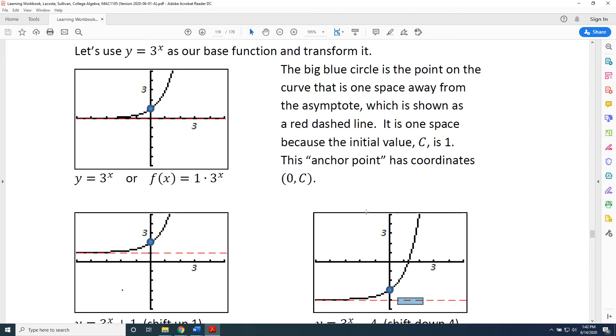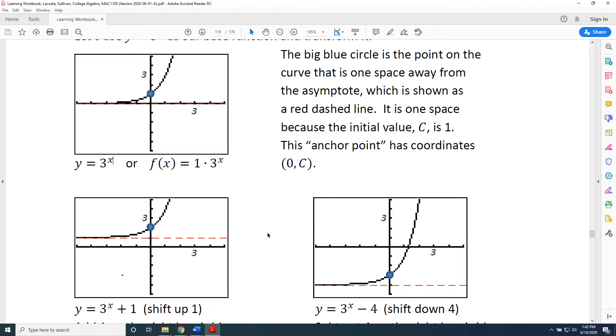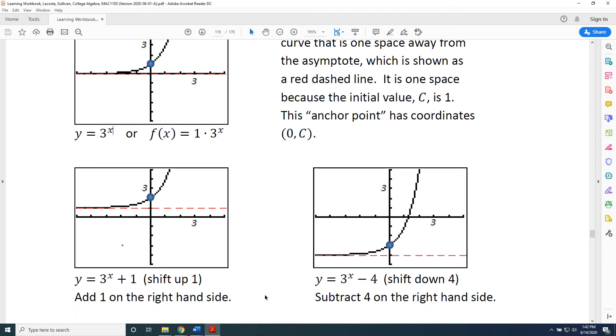So, what is the equation of the graph in the lower right? Well, it's the same as the equation of the graph in the upper left, but vertically shifted down 4 spaces and therefore with a subtract 4 at the end. The equation of the graph in the lower right is y = 3^x - 4. If I scroll down, we can see that the equations have been written here for us. 3^x + 1, 3^x - 4.